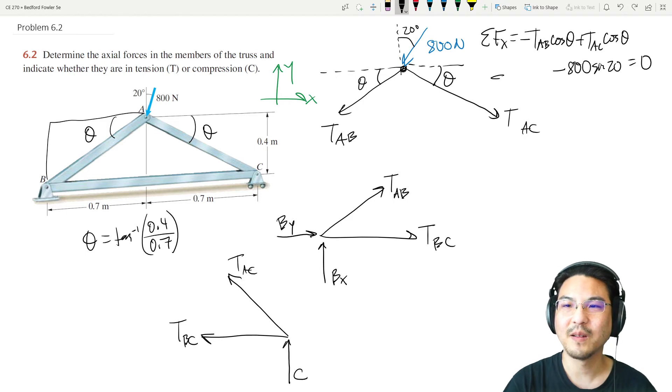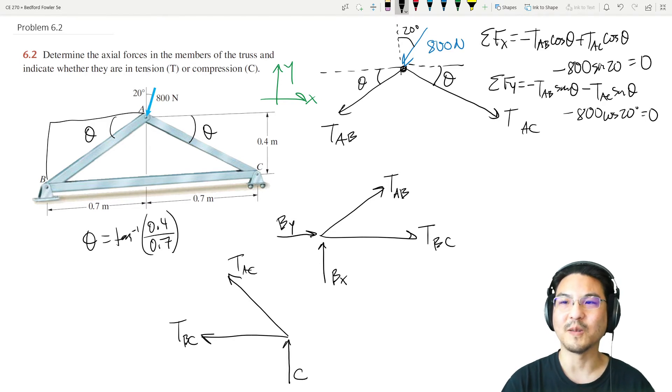In the y direction we have negative TAB sine theta minus TAC sine theta minus 800 cosine 20. So two equations, two unknowns, which means you can solve for those two.